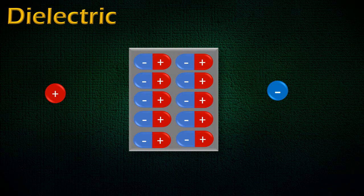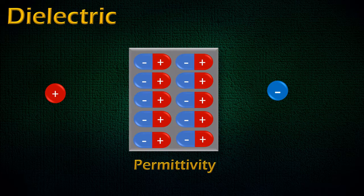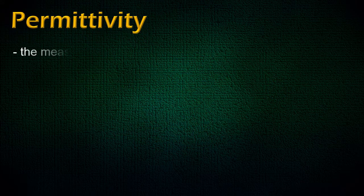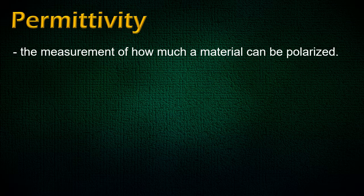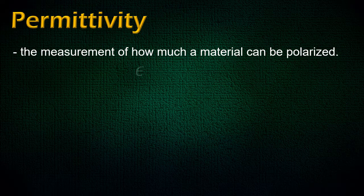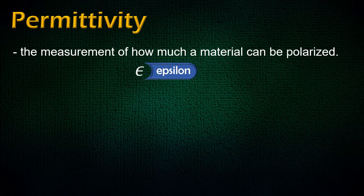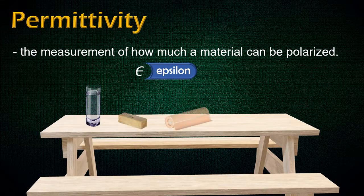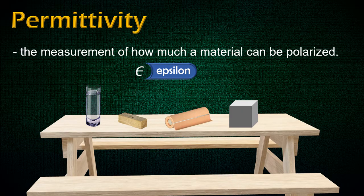And this property of polarization of a dielectric is measured in terms of permittivity. So in short, permittivity is the measure of how much a material can be polarized and it is represented by the symbol epsilon. Now since every dielectric will have its unique tendency, unique behavior, the value of permittivity is different for different materials.